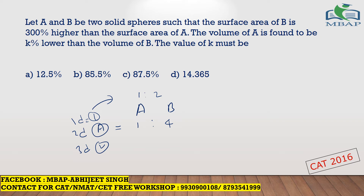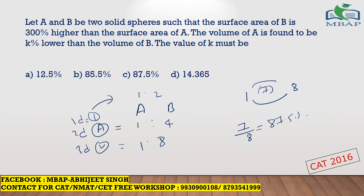Now, if the areas are in the ratio of 1 to 4, the one-dimensional figure (length) would be in the ratio of 1 to 2, because area is the square of the length ratio. If the one-dimensional ratio is 1 to 2, the three-dimensional volume ratio is the cube, which is 1 to 8. The question asks: volume of A is what percent lower than volume of B? One is 7 less than 8, so 7 divided by 8 is 87.5 percent. The answer is k = 87.5.